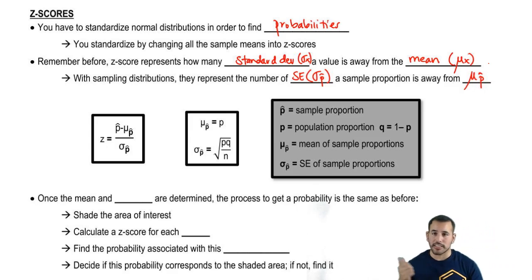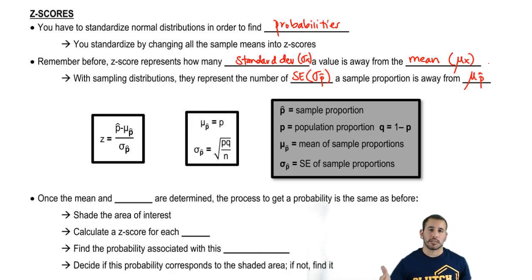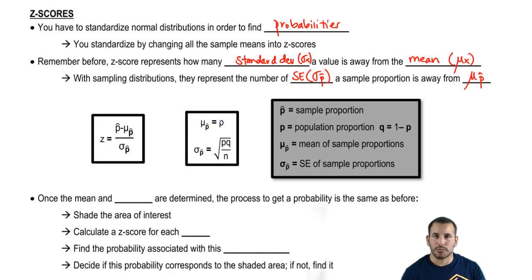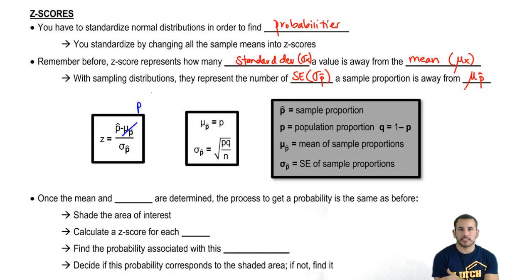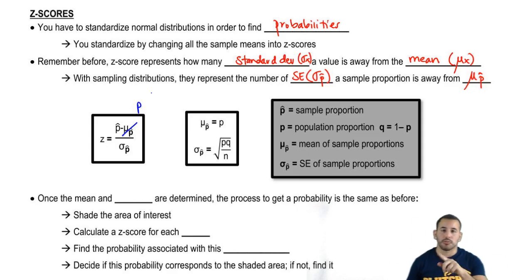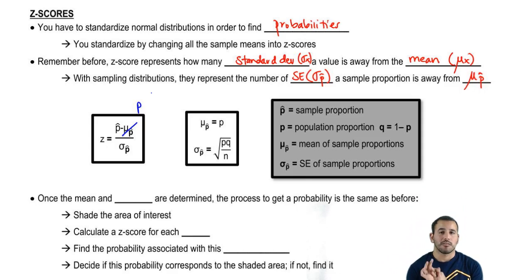Bringing it all back home: the Z-score is the sample proportion minus the mean of the sample proportions, divided by the standard error of the sample proportions. The mean of the sample proportions is the population proportion P. So our Z-score is always some number minus its mean divided by the measure of spread. The standard error is the square root of P times Q over N, where P is the population proportion, Q is the probability of failure, and N is the sample size.